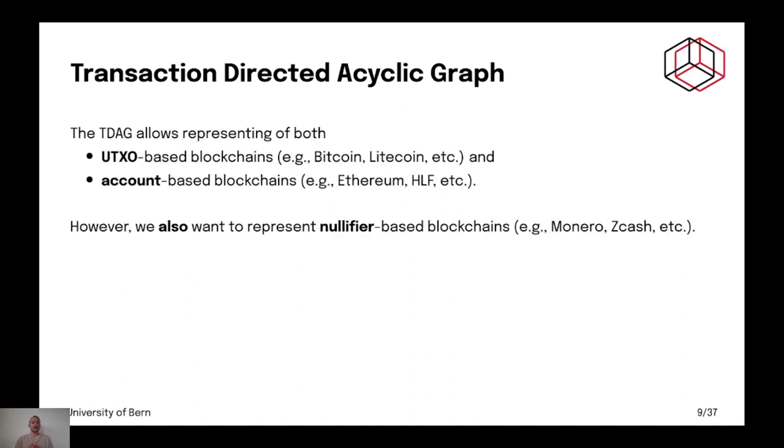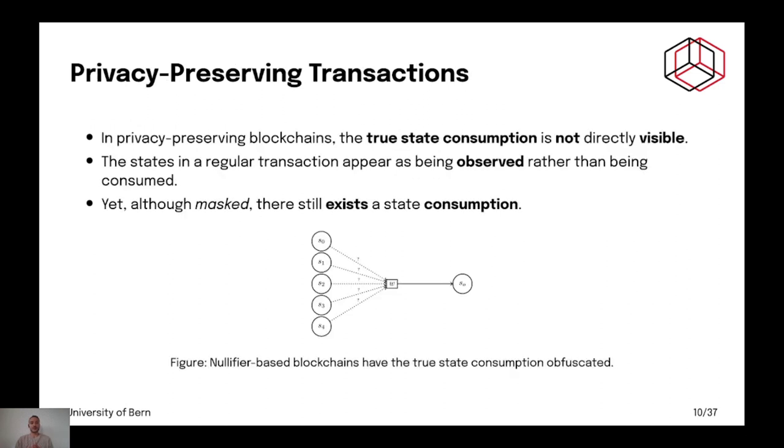Now, if you take the TDAG only, the TDAG allows representing both UTXO-based blockchains and account-based blockchains. Now, we also want to represent what we call nullifier-based blockchains. These are Monero, Zcash, and also some add-on privacy solutions.